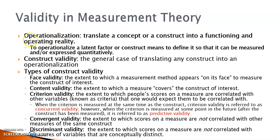In order to understand validity, we first need to talk about the concept of operationalization. Operationalization in measurement is about translating a concept or a construct into a functioning and operating reality. For example, depression is a latent construct. In order to measure it, we need to identify the measurable behavioral manifestation of depression based on the knowledge we have about depression and its common symptoms.